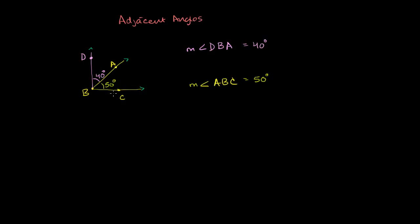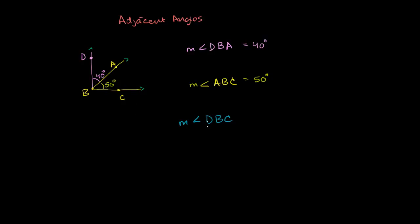Now there's something else that you might notice. We know that the measure of angle DBA is 40 degrees and the measure of angle ABC is 50 degrees, and you might be able to guess what the measure of angle DBC is. If you had a protractor right over here, this is opening up to 50 degrees and going another 40 degrees. So the measure of angle DBC would be equal to 90 degrees. And we already know that 90 degrees is a special angle — this is a right angle.